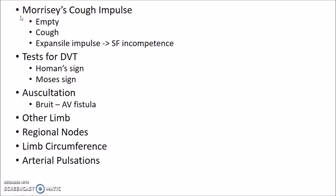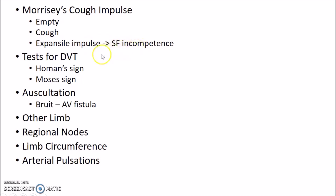The next test is Morris's cough impulse test. The patient is asked to lie down and the veins are emptied. The patient is then asked to cough forcibly. If you feel an expansive impulse at the saphenofemoral junction, it indicates saphenofemoral incompetence.